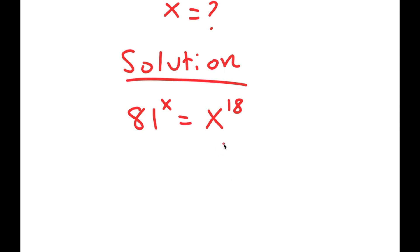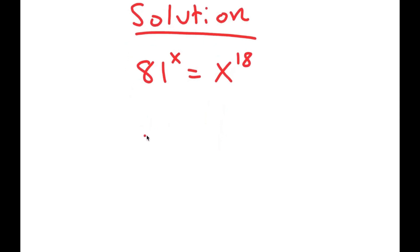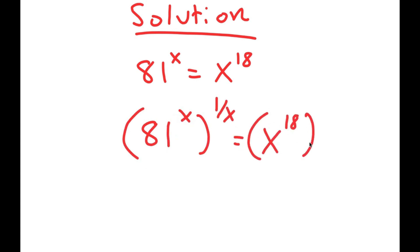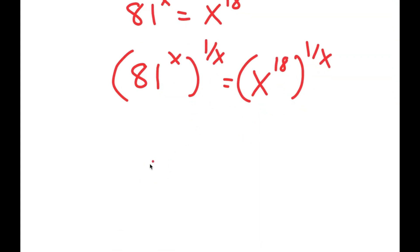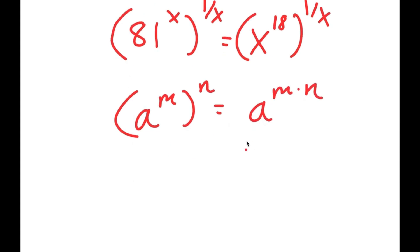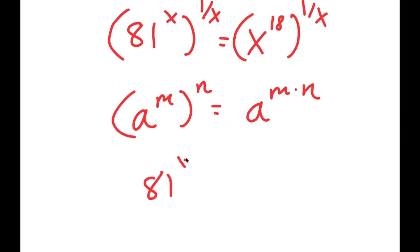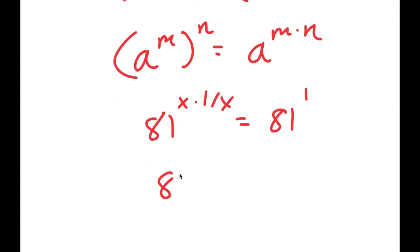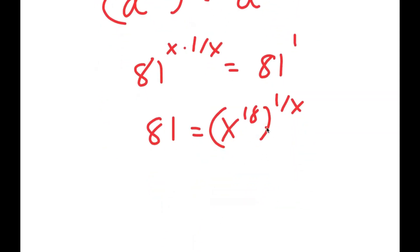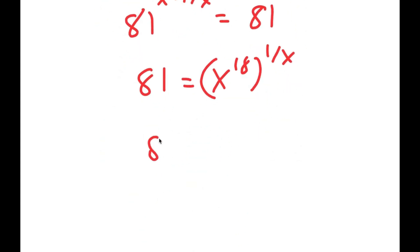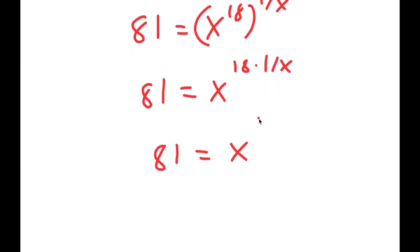I'm going to take the power of 1 over x on both sides. So I get 81 to the power of x to the power of 1 over x is equal to x to the power of 18 to the power of 1 over x. If I have something in the form a to the power of m to the power of n, this equals a to the power of m times n. So 81 to the power of x times 1 over x is equal to 81 to the power of 1, which is 81. So I get 81 is equal to x to the power of 18 over x.